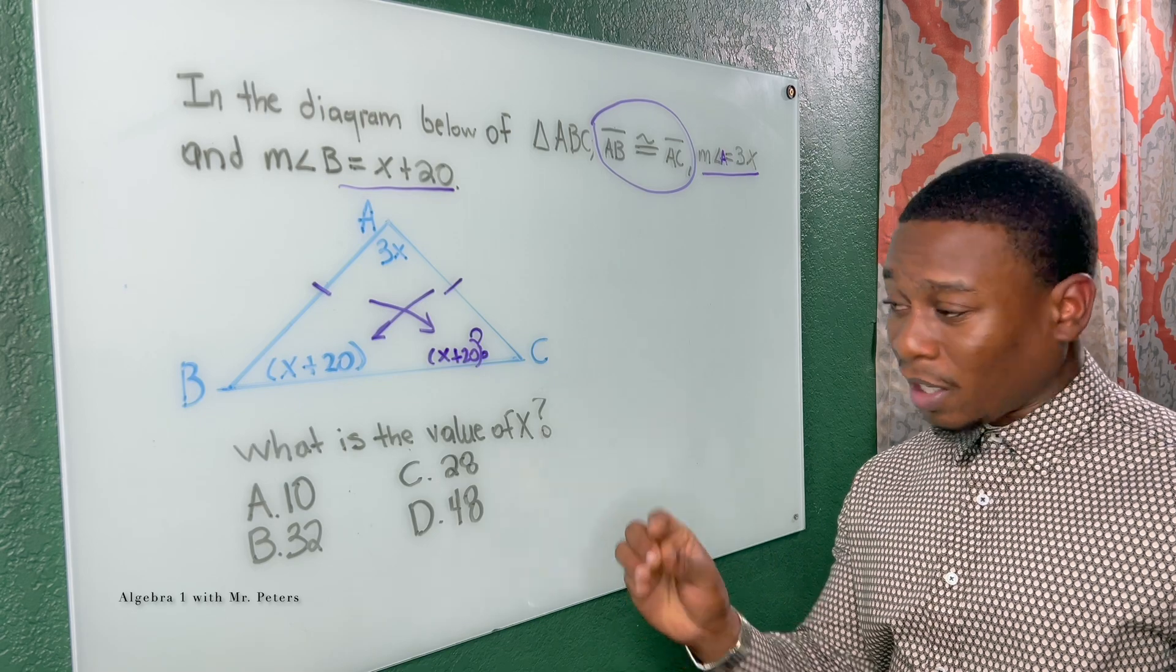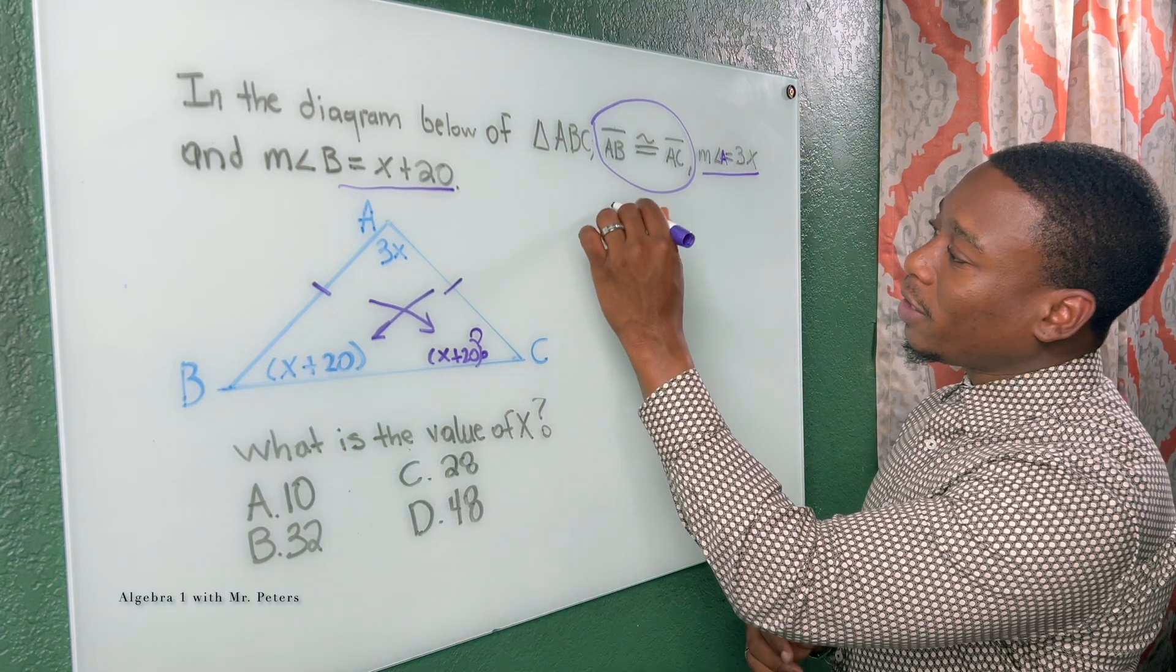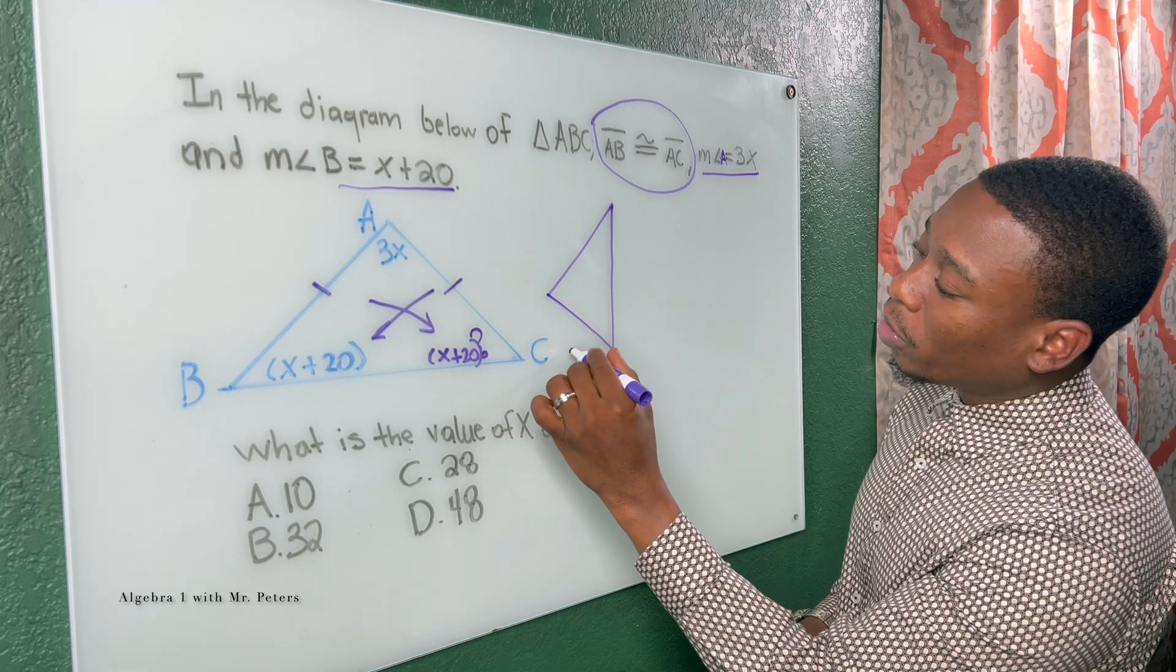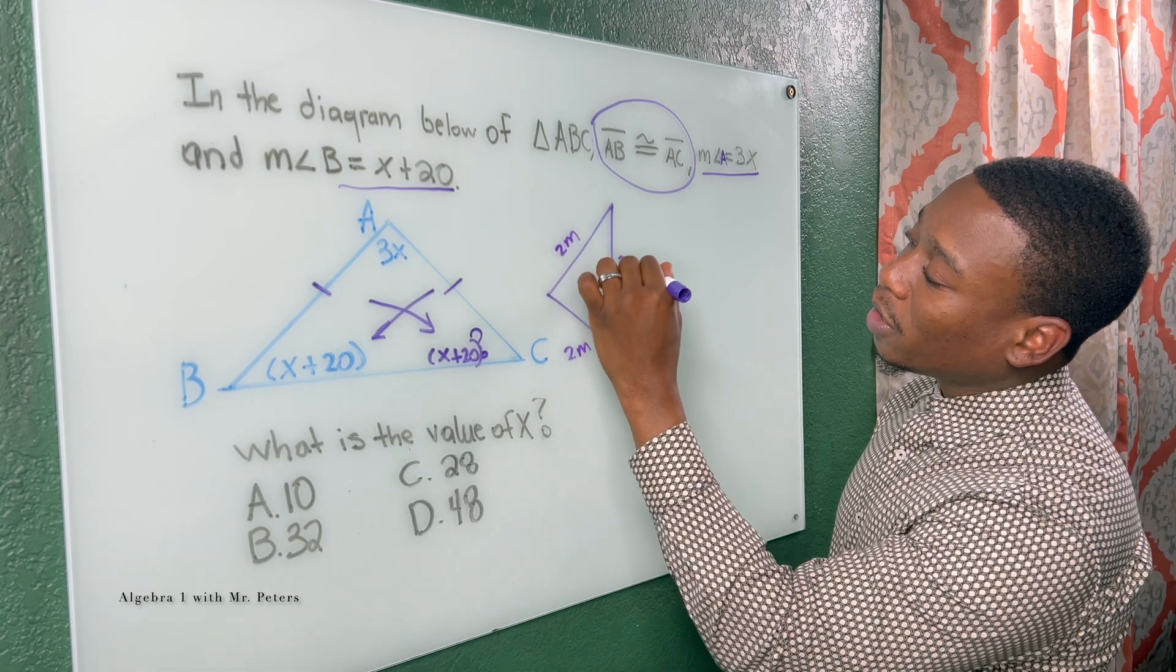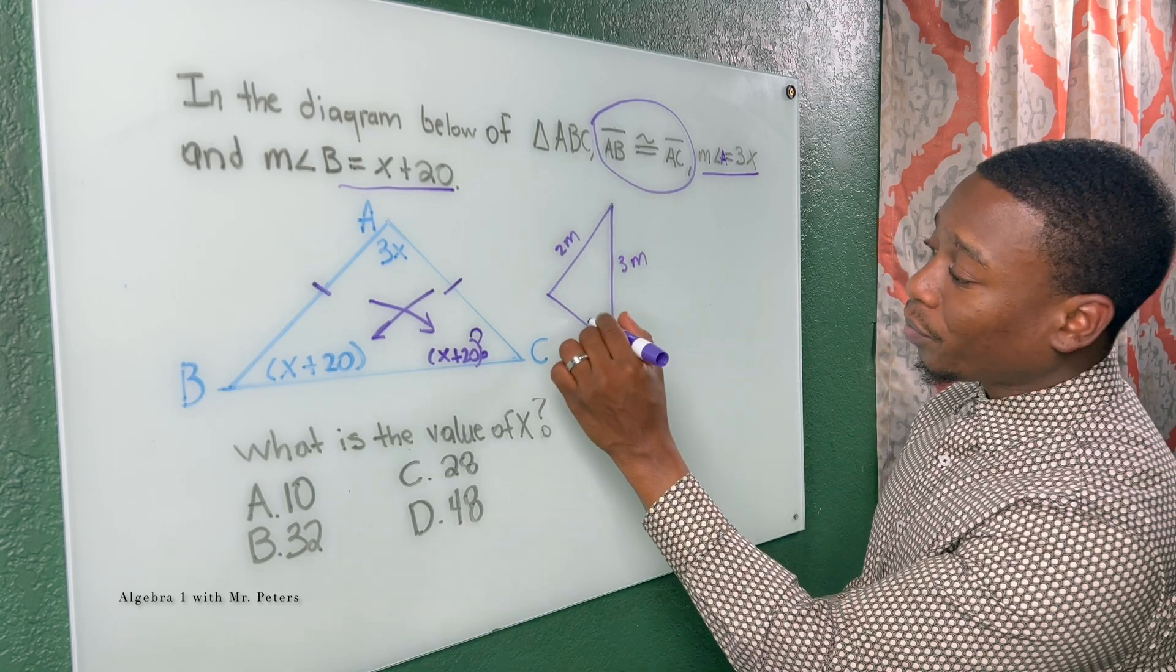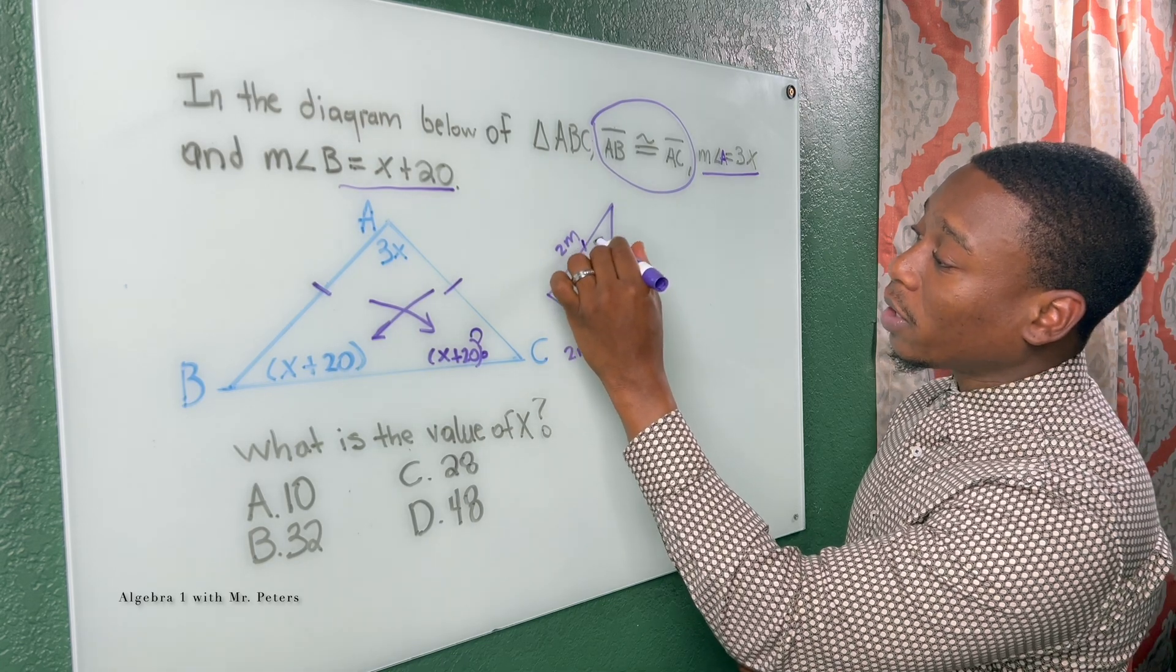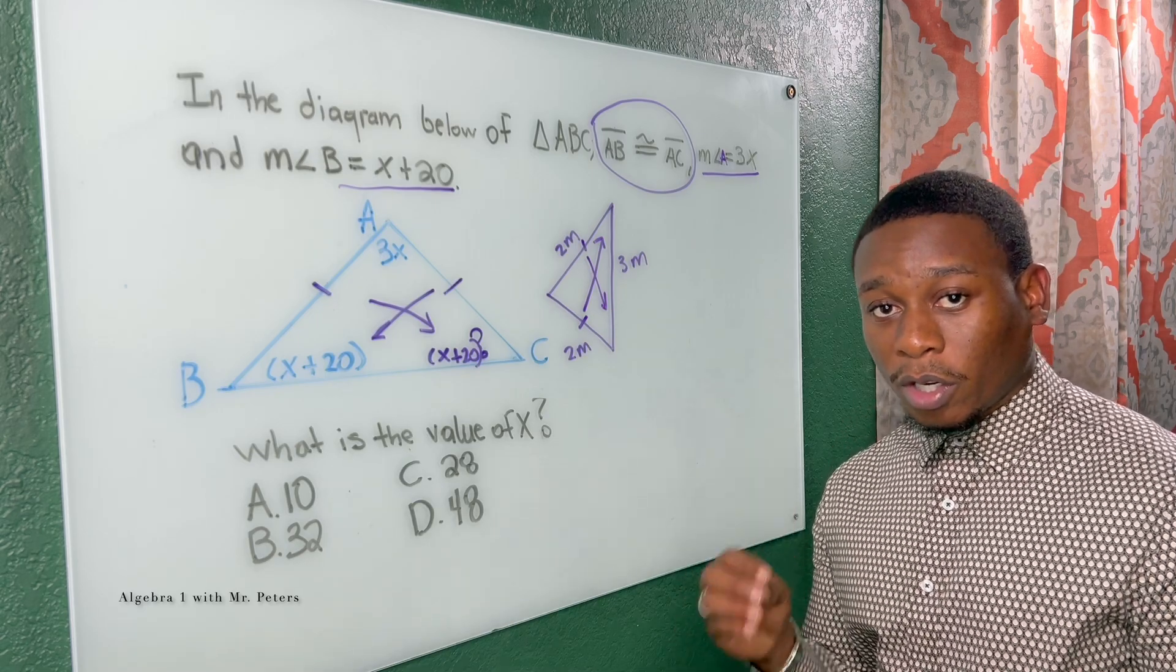Now, sometimes in this problem, it's probably easier for us to determine that. But let's say they gave us a triangle like this. And all they told us was that this is two meters, this is two meters, and this is three meters. This is another way for us to use those clues. So again, these two sides are congruent, and the angles opposite of that side are congruent. So this is why it's important to understand the rules.